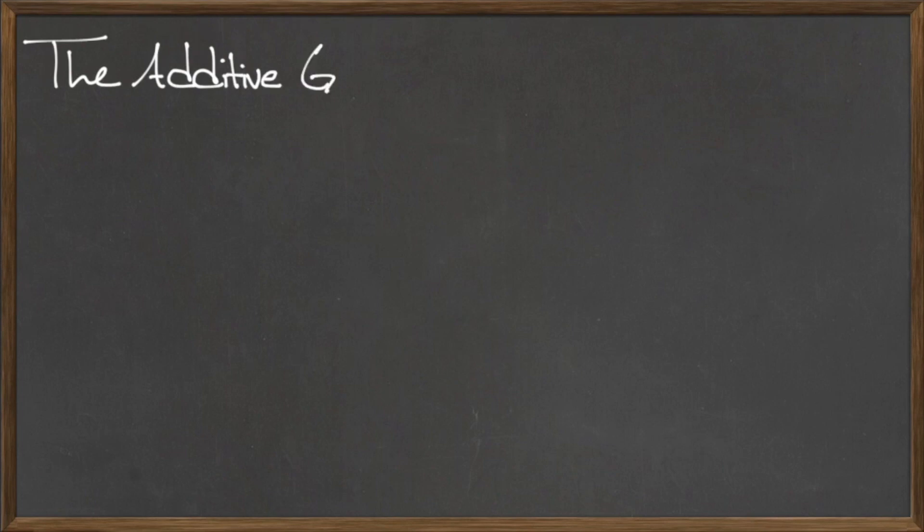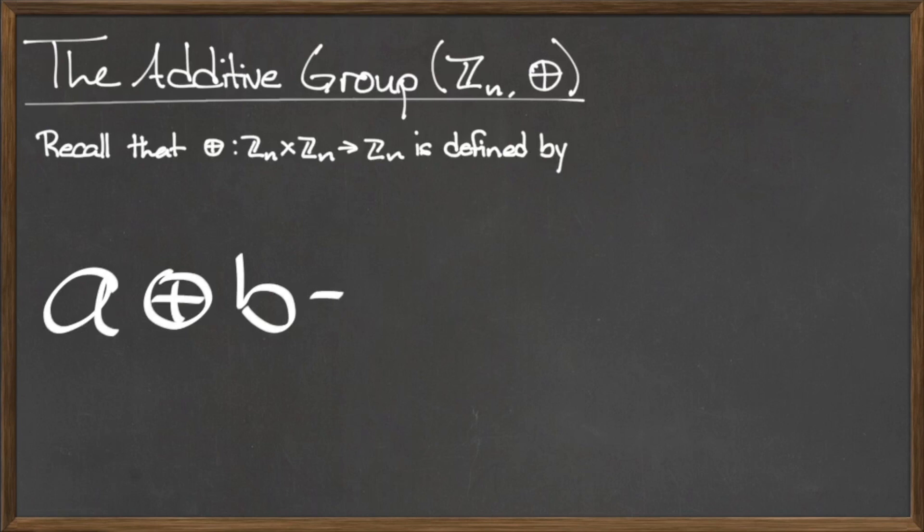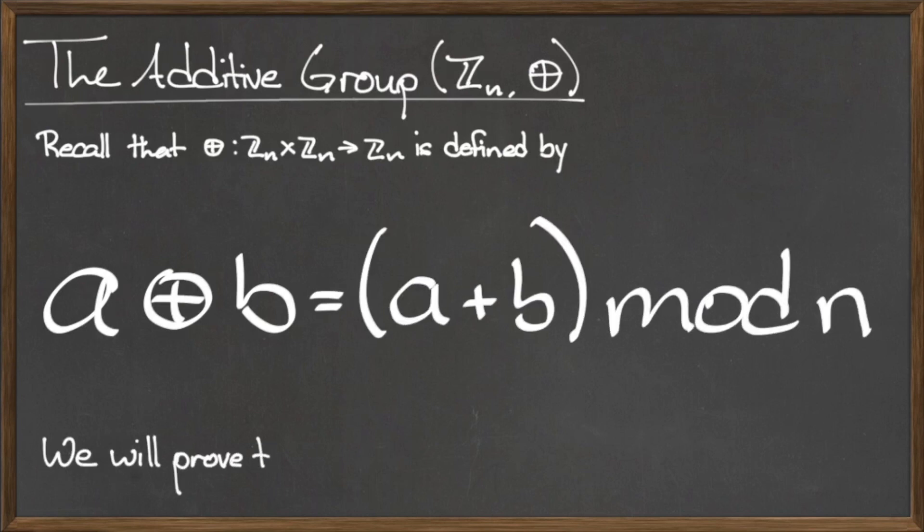Consider the set of integers mod n under the operation ⊕. Remember that the operation ⊕, from Zn cross Zn to Zn, is defined by a ⊕ b equals the quantity a plus b mod n.